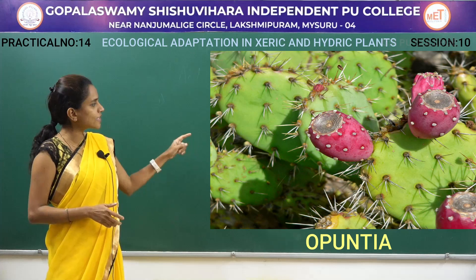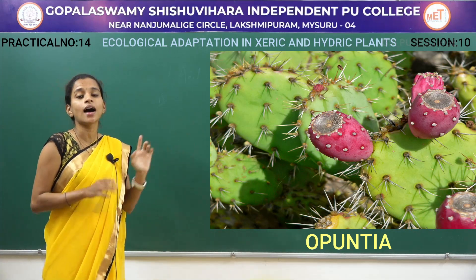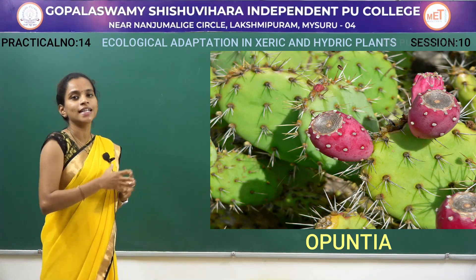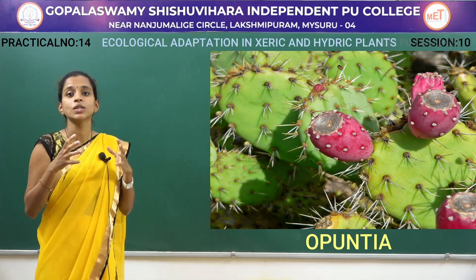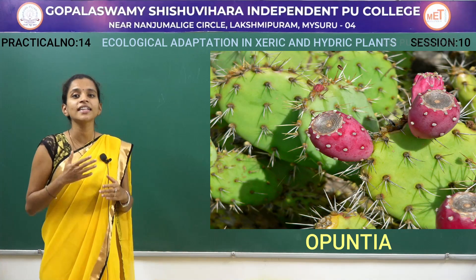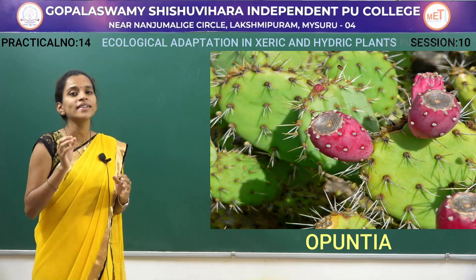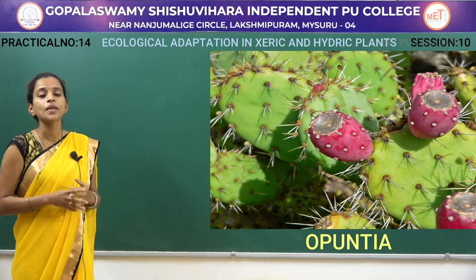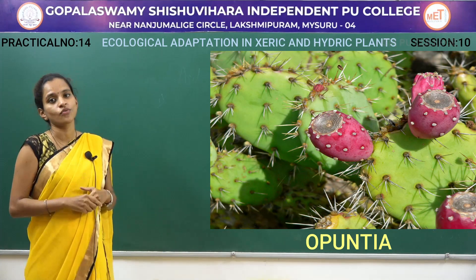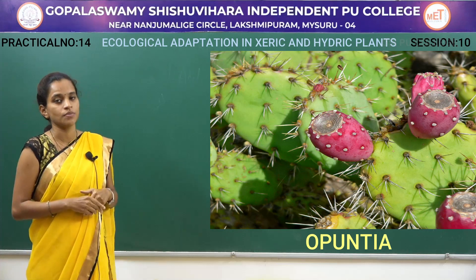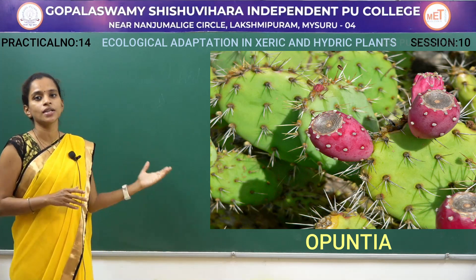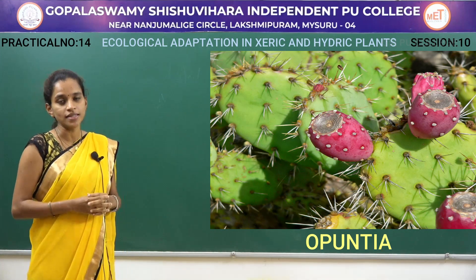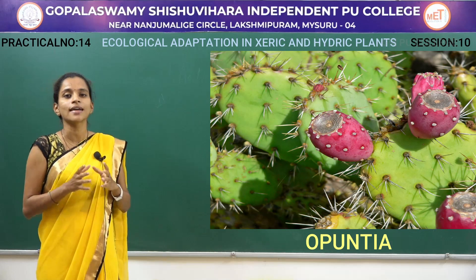In this Opuntia, what you can see are the spines. These are not thorns but these are spines. Here in this xeric condition where the water availability is very less, the cactus modifies its leaves into pointed structures called spines. They can reduce the loss of water, that is what we call transpiration. So these have modified their leaves into spines to reduce transpiration.